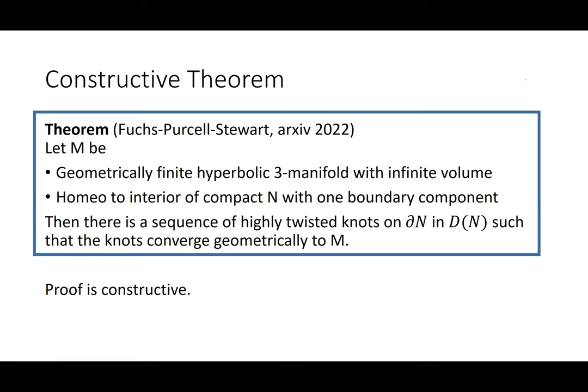This is now a paper on the arXiv. If M is a geometrically finite hyperbolic three-manifold — meaning it has a finite-sided fundamental domain — and it is homeomorphic to the interior of a compact manifold with one boundary component, then there is a sequence of highly twisted knots on the boundary in the double, such that the knots converge geometrically to M. The proof is constructive, and what we construct are fully augmented links. This is not as general as the paper with Souto, but geometrically finite ones converge to all the others via the density theorem.